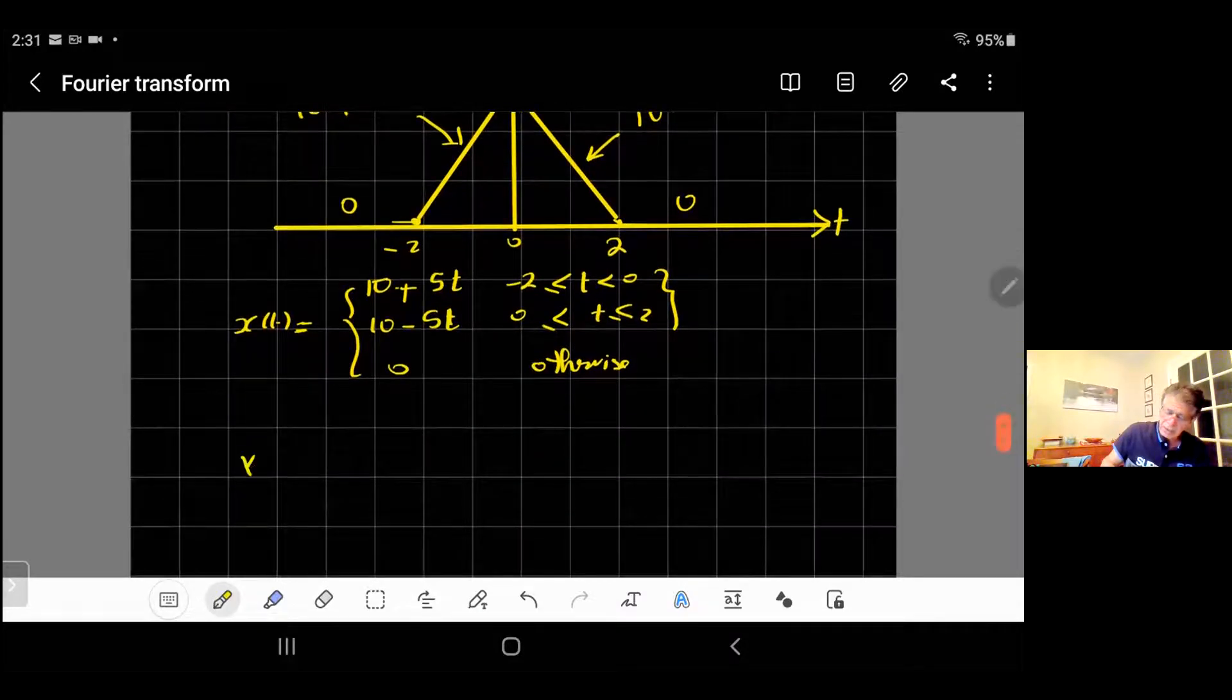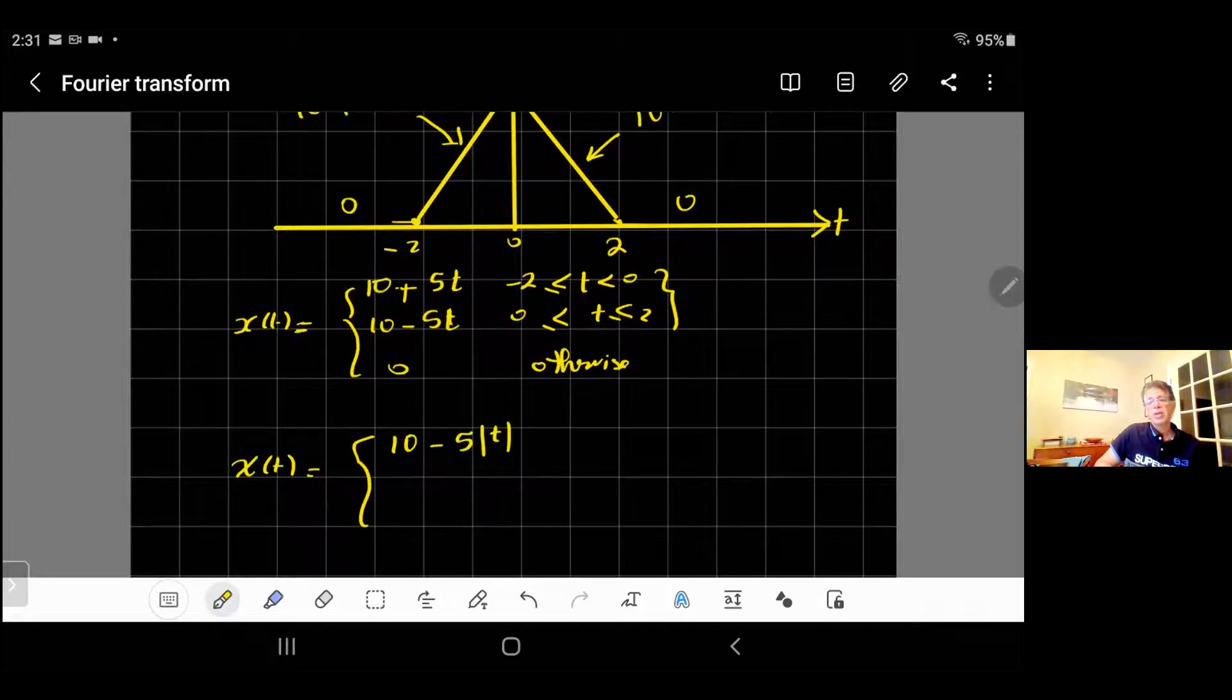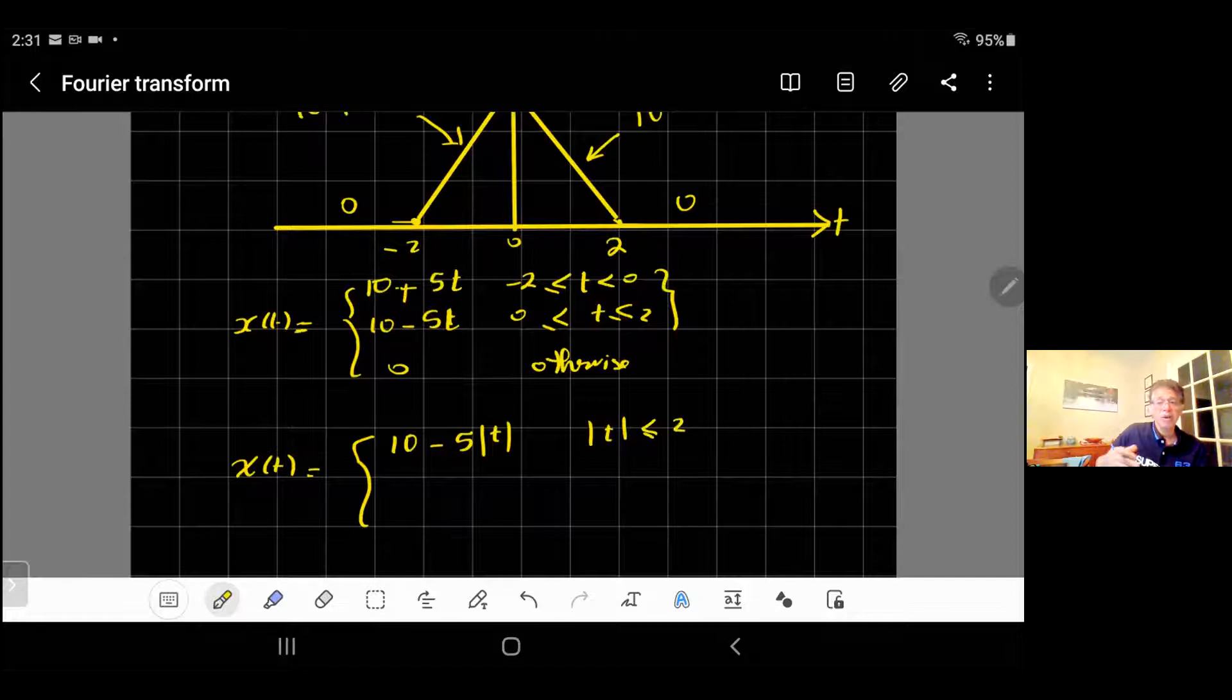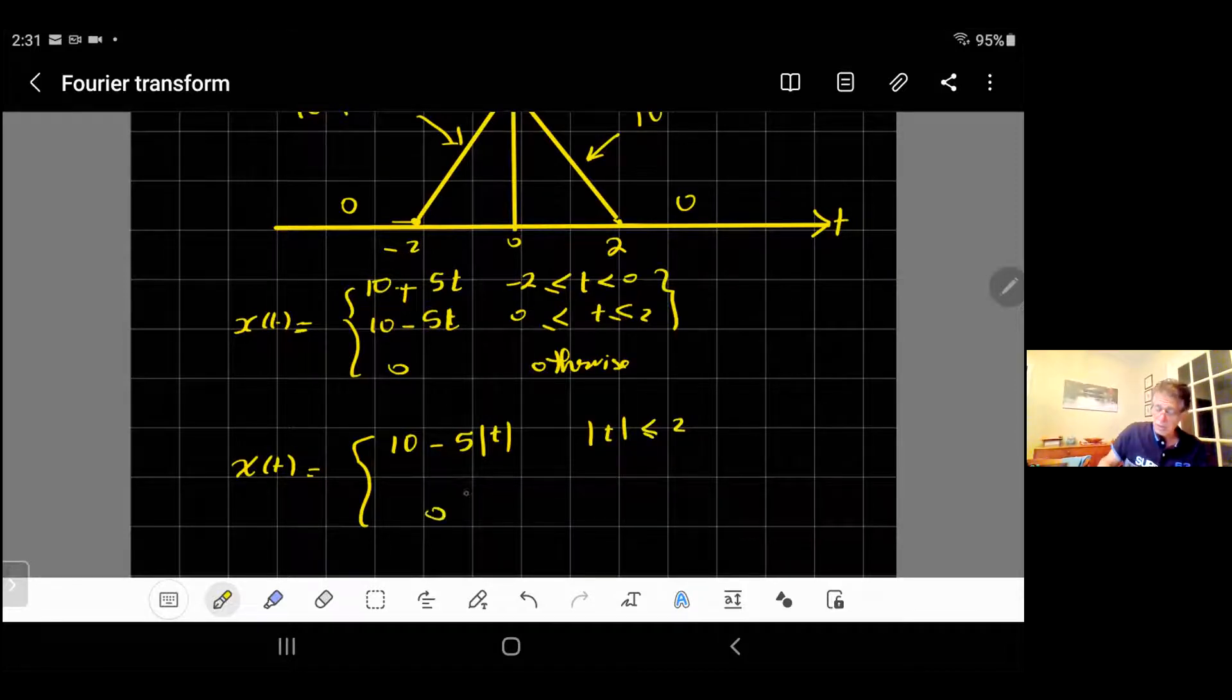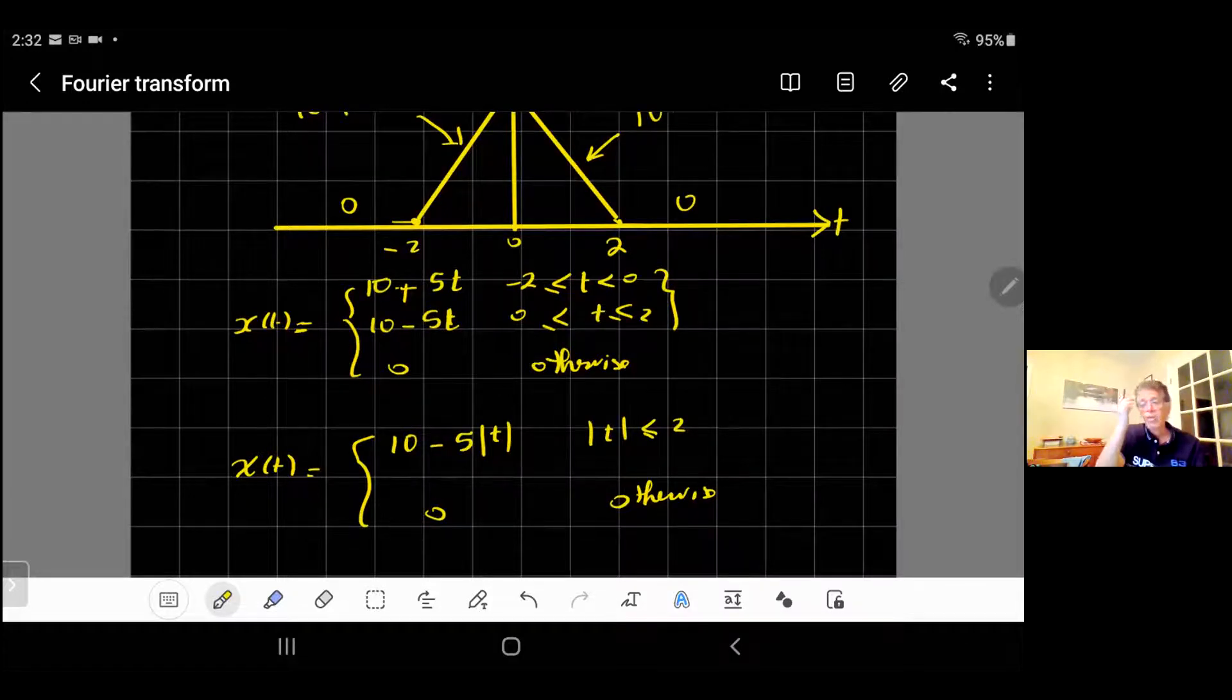This expression, both parts are similar except only the sign, so usually when you have something like that you can use absolute value. So I can write it simply as 10 minus 5 times the absolute value of t. Absolute value of t makes the negative positive. That will be when the absolute value of t is less than 2, that means from minus 2 to 2, and zero otherwise.